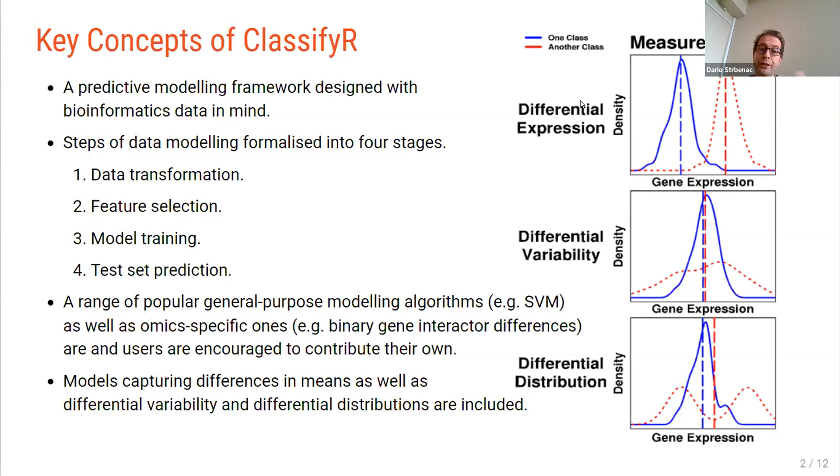So the kinds of models that are included capture differences in three broad categories. Typically, when people look for differences, they look for difference in means. But we've thought that also differences in variability and differences in distributions are also important. So in the graphic on the right side of screen, at the top, I'm showing differential expression. And this is what you would get if you did your typical T test from Limma or your likelihood ratio test from edgeR, for example. And the vertical dashed lines are the mean of each class. And we see that these two classes have different means.